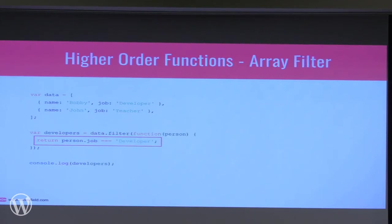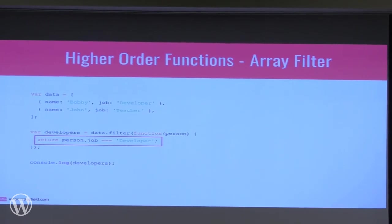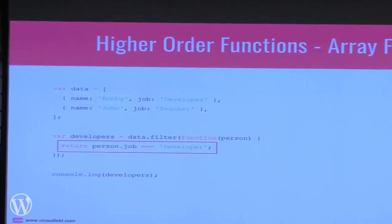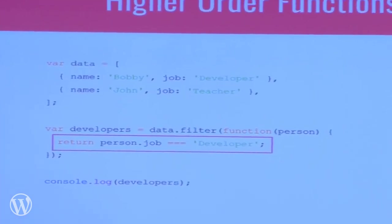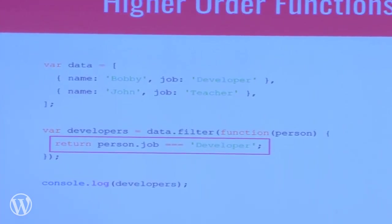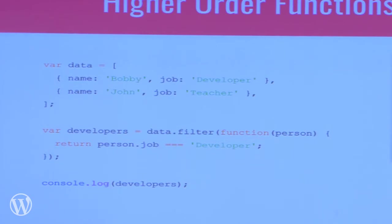Filter: if you want to take an array and pull items out based on conditional logic, just return a conditional check. For example, data.filter() with a function that returns person.job === 'developer'. Only people whose job equals developer get put into the new developers array. Higher-order functions return a completely new copy of the array, so the original data is unchanged — we end up with just the developers.